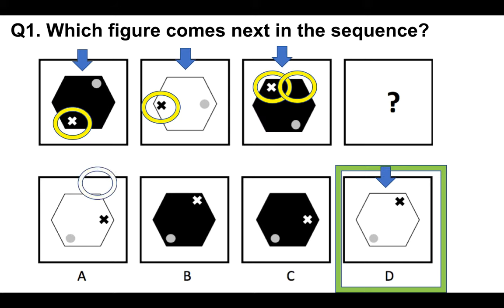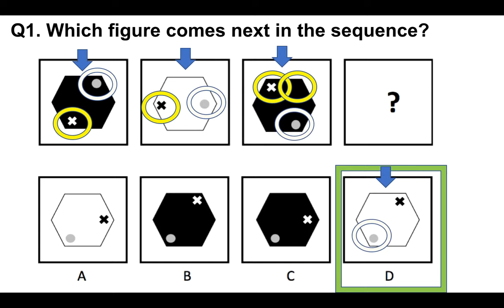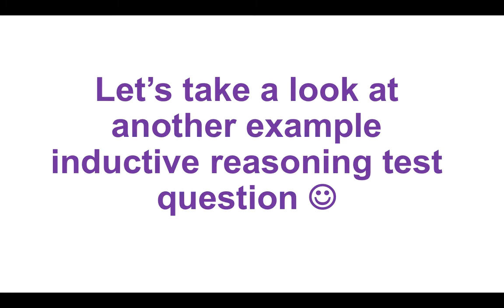Let's confirm that with the gray circle there. You'll see it's moving clockwise one position each time, which means it would need to be there. So we can confirm that the correct answer is in fact D. Now of course, as you do more of these, your speed will increase, so you'll be able to do them quicker under timed conditions.